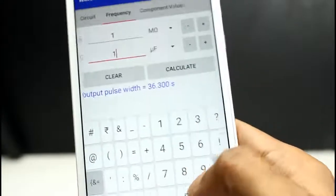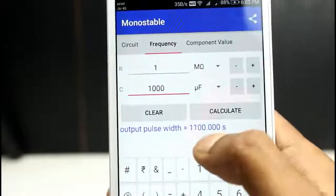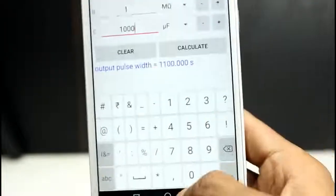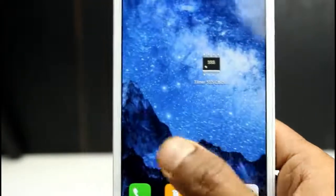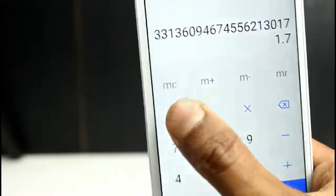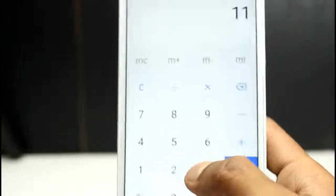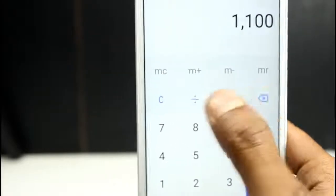But now here I change it to 1000 microfarad so you will get 1100 seconds. You can calculate this 1100 seconds to minutes, then you have to divide 1100 by 60 seconds, so you will get it to minutes.